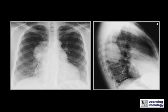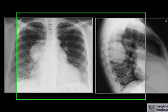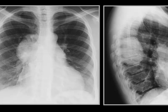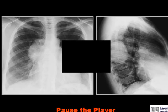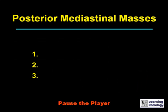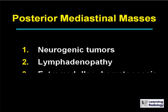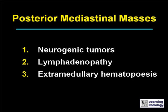Here's the next differential. The differential diagnosis is for a posterior mediastinal mass. There are three causes. The three main causes of a posterior mediastinal mass are neurogenic tumors, lymphadenopathy, or extramedullary hematopoiesis.